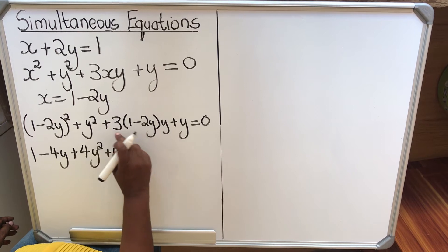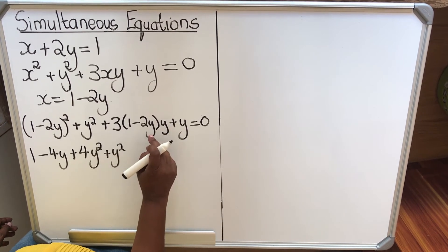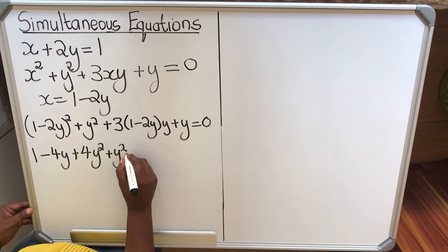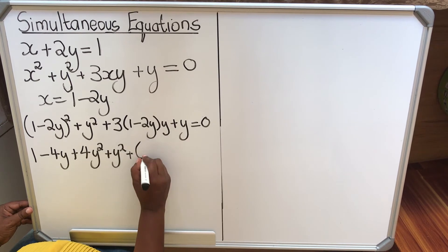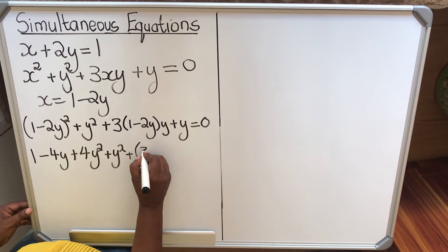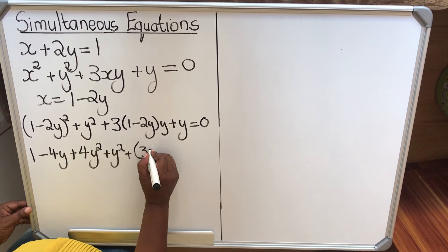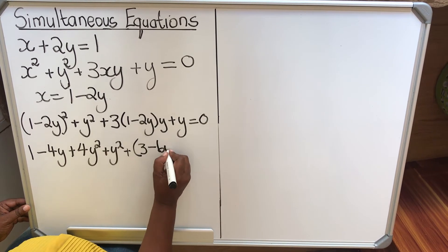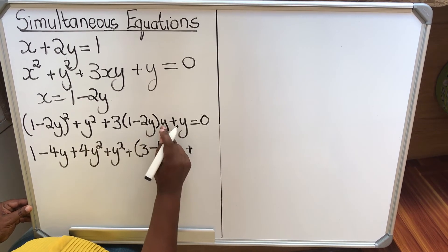For most learners, if you do everything at once they make mistakes. So let's start by multiplying with a 3 first. So we're going to keep the bracket. Go 3 times 1 is 3. 3 times minus 2 is minus 6y. Then we get the y. That y.